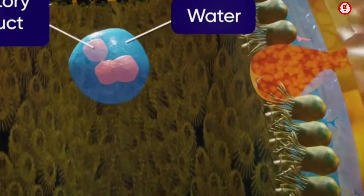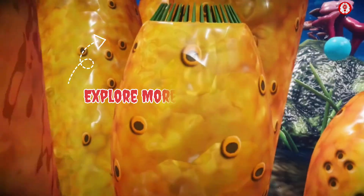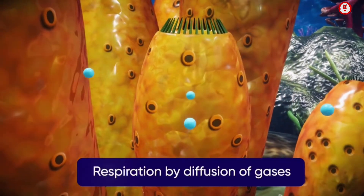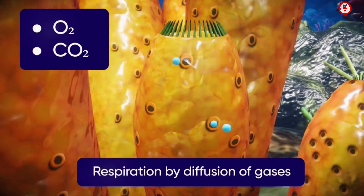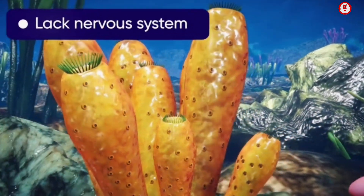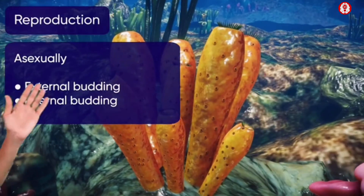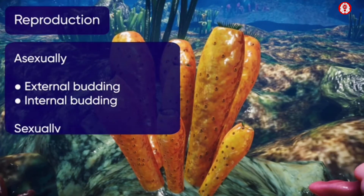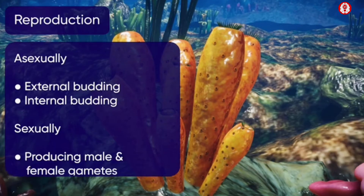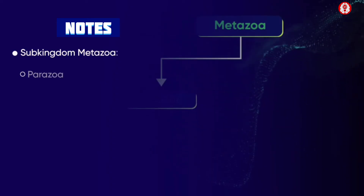These animals exhibit intracellular digestion. Excretory substances are expelled through the osculum along with outgoing water. Respiration takes place by diffusion of gases. They lack a nervous system. They reproduce asexually by external and internal budding, and sexually by producing male and female gametes.